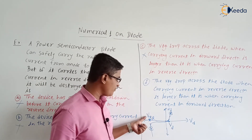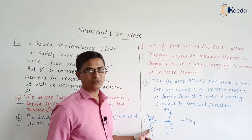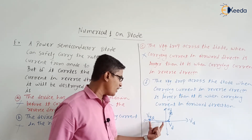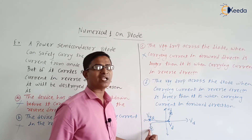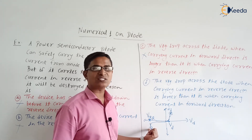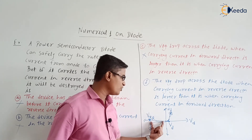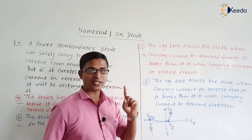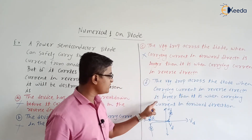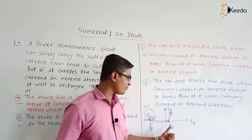But in the reverse direction, the power loss will be VBR into the rated current — the same magnitude of current but in the reverse direction. Here we are having high power loss in the reverse direction when high current is flowing, because the current value is the same in both cases, but the voltage value in reverse is very high. So the voltage drop across the diode when carrying current in the reverse direction is larger than when carrying current in the forward direction.